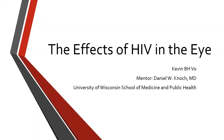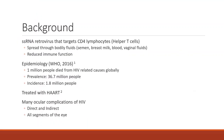Hello, my name is Kevin Vo and I will be talking about HIV and its effects in the eye. A little bit of background before we talk about the ocular manifestations of HIV. HIV is a single-stranded RNA retrovirus that targets the CD4 cells. It is spread through bodily fluids and causes a reduction in immune function, because the helper T-cells are the backbones for coordinating the immune response.